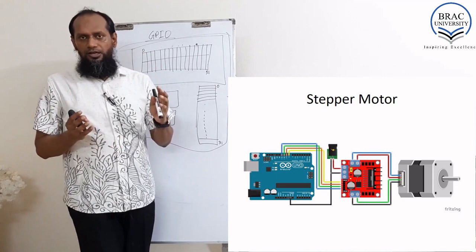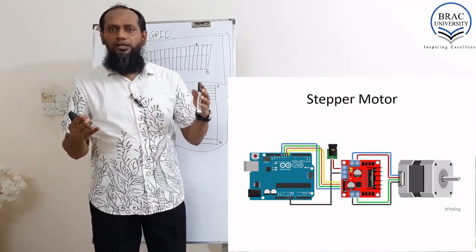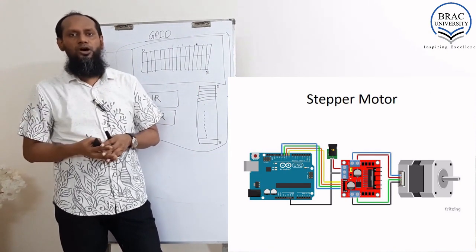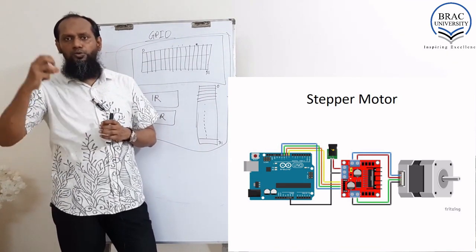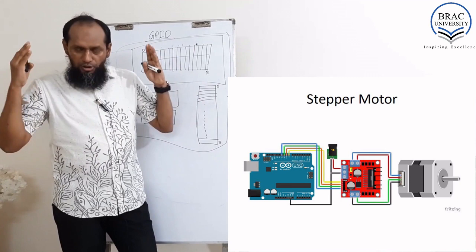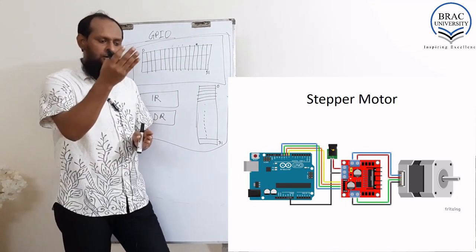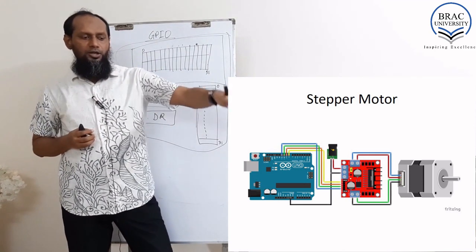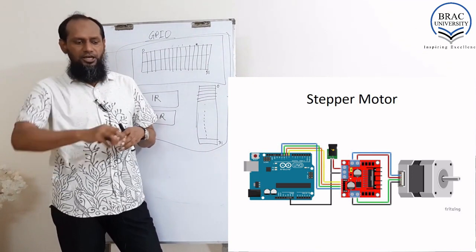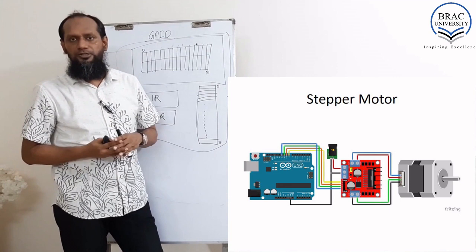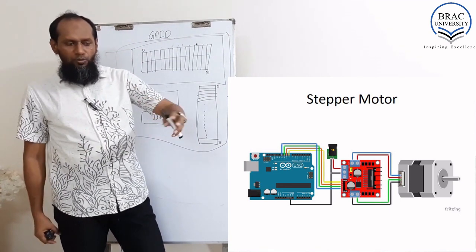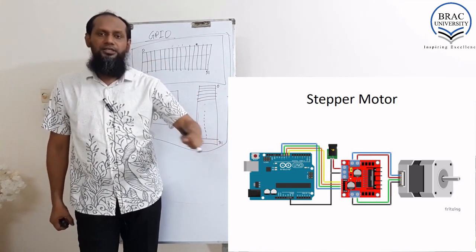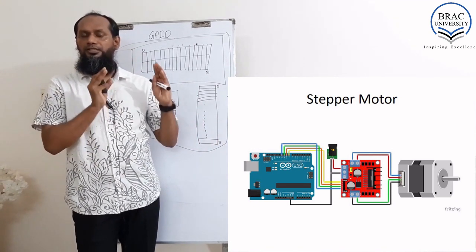For the stepper motor, in a stepper motor there are two coils — unlike a DC motor which requires only one connection. One coil connects with one motor connection and the other coil with the other motor connection. We then give the direction. Maintaining the sequence using the control connections is very, very important — the sequencing is critical.